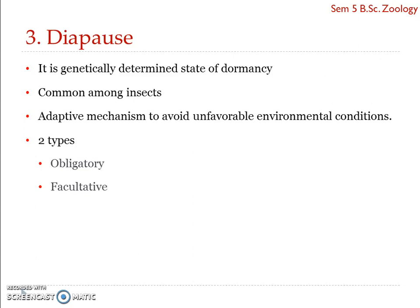Unfavorable conditions of food supply, temperature, and moisture also promote diapause, but the most important one among these is the photoperiod. Diapause is determined both genetically as well as by endocrine means.